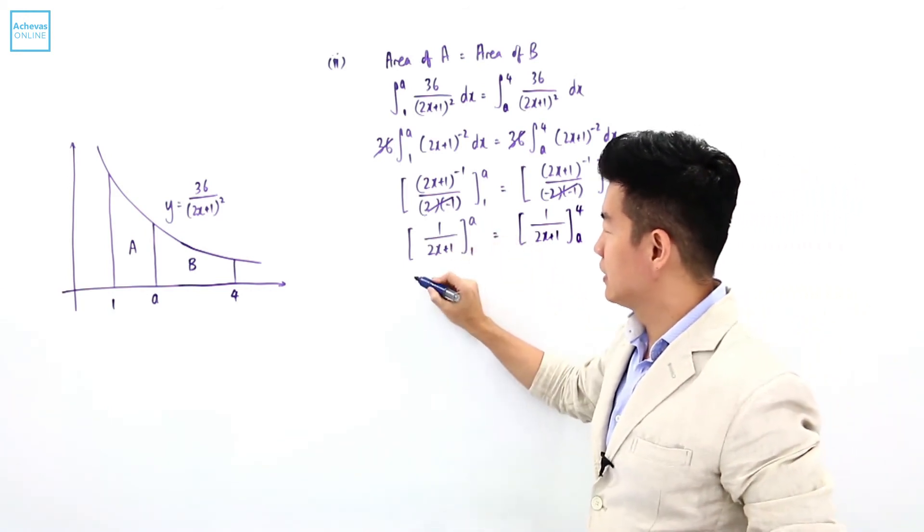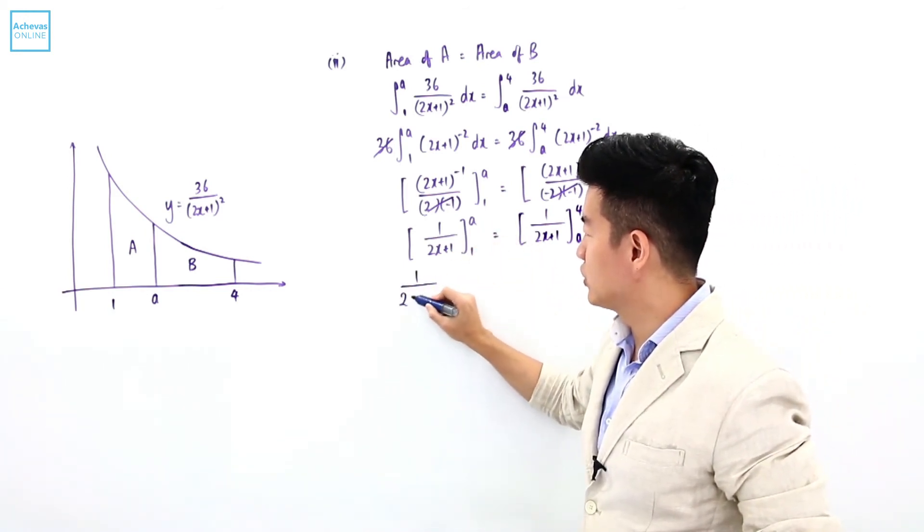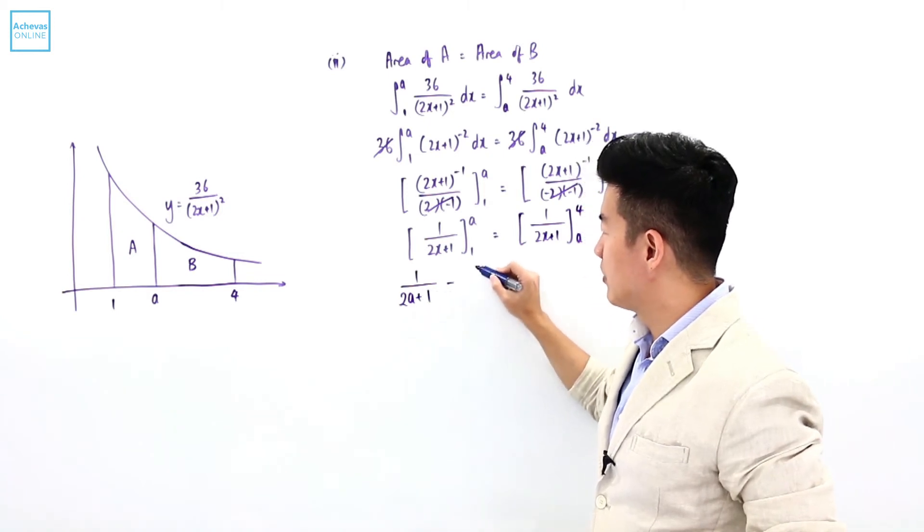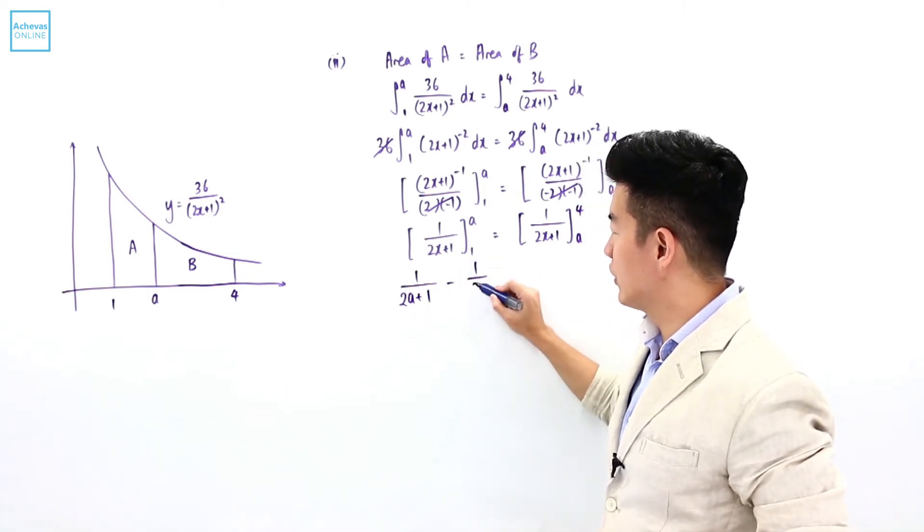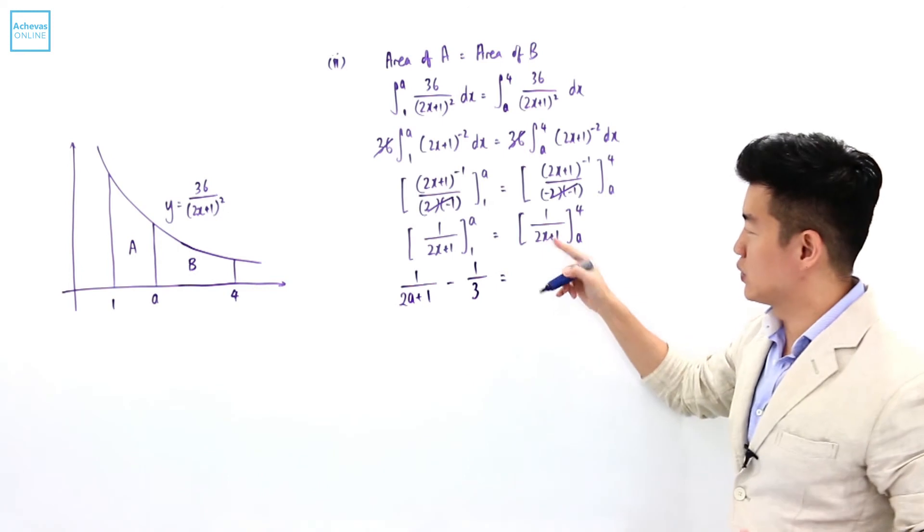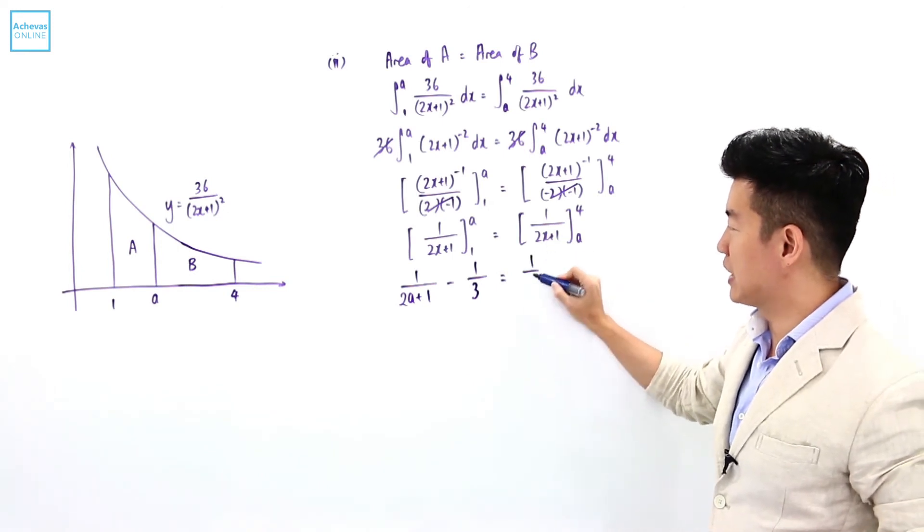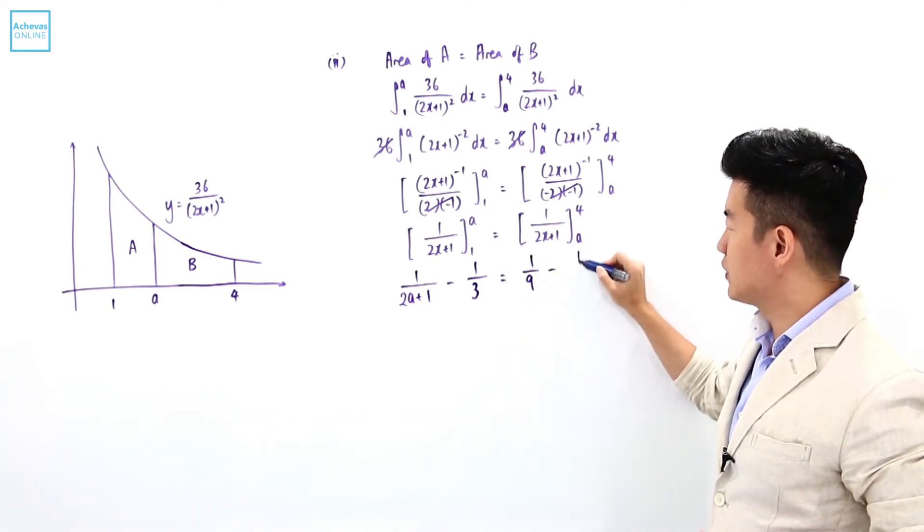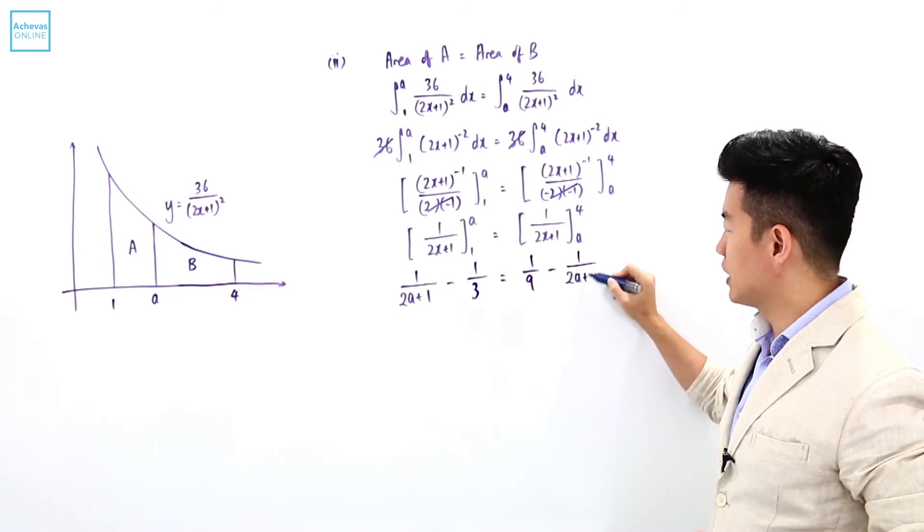Substituting A in, it is 1/(2A + 1) - 1/3 = 1/9 - 1/(2A + 1).